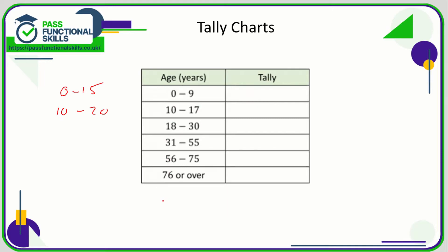What is the maximum age of a human being? Obviously no human being can ever be 150, so for the final category we could have put 76 to 150, but because there's technically no maximum it's probably easier to say '76 plus' or '76 or over.'